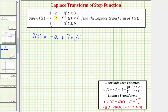To go from the function value of five to nine, we have to increase the function value by four. To do this, we can say plus four times — we want to turn plus four on when t is greater than or equal to six — so plus four times u sub six of t. Now we have f of t written in terms of the unit step function u sub c of t.